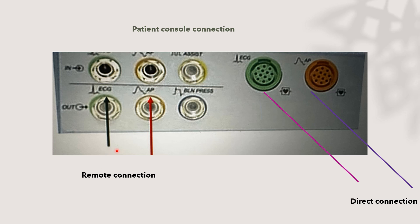There are two types of patient console connection: direct connection, where the cable is connected directly from the patient's pressure line or ECG to the console; or remote connection, using the bedside monitor or anesthesia monitor. Direct connection is preferred, because remote connection introduces some delay — possibly seconds — which can affect the cardiac cycle.